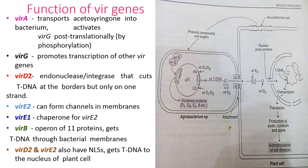Whenever the plant is wounded, it secretes a phenolic compound — acetosyringone — and sugars. This acetosyringone is detected by the vir A gene, which activates the vir G gene by phosphorylation. The vir G gene then promotes the transcription of other virulence genes.